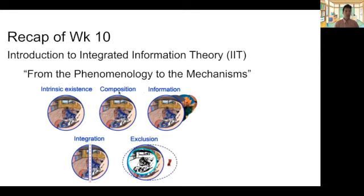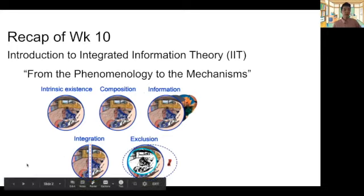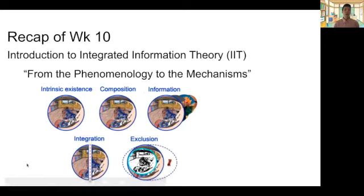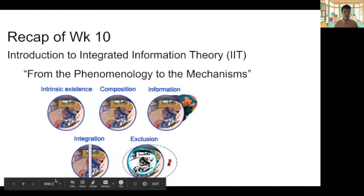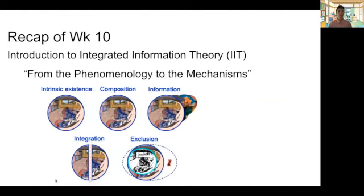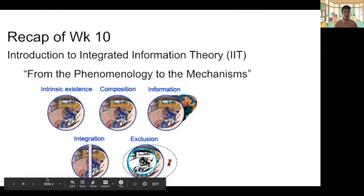The five fundamental properties IIT identifies are: first, intrinsic existence — that consciousness exists; and composition — that any experience of conscious content is composed of various components. Then informativeness, meaning that any moment of consciousness is informative in the sense that it excludes, or is one out of many possible conscious experiences. Integration means the conscious experience is always experienced as a unified whole, not split. And exclusion means consciousness is experienced at a particular scale with a boundary, no more, no less in terms of space, time, and features.